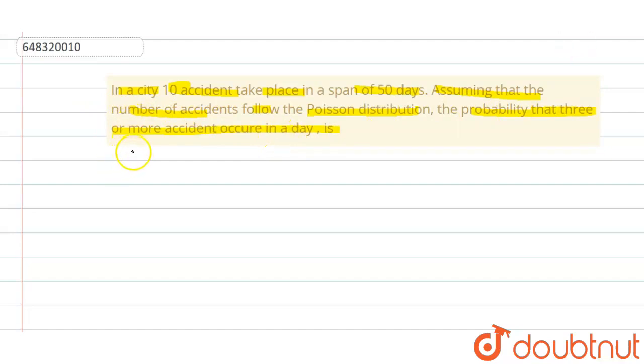First of all, given that it follows Poisson distribution, that means X follows Poisson lambda. Lambda is the parameter of Poisson distribution, and we know probability of X equals x equals e to the power minus lambda, lambda to the power x, by x factorial, where x starts from 0, 1, 2, dot dot infinity, and 0 otherwise.